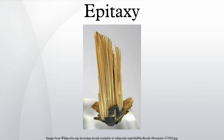In vapor phase epitaxy, silicon is most commonly deposited by reacting silicon tetrachloride and hydrogen at approximately 1200°C: SiCl4(g) + 2H2(g) → Si(s) + 4HCl(g). This reaction is reversible, and the growth rate depends strongly upon the proportion of the two source gases. Growth rates above 2 micrometers per minute produce polycrystalline silicon, and negative growth rates may occur if too much hydrogen chloride by-product is present.